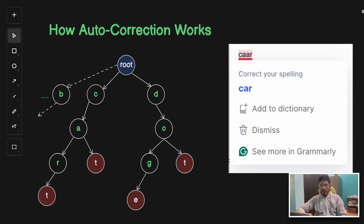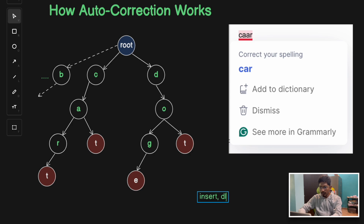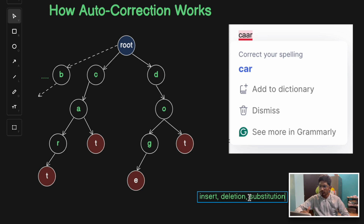Now let's see how auto-correction actually works. The auto-correction technique tries to find similar words matching the input word. If you input a wrong word like 'caar', it tries to find a list of matching words. It uses two techniques — the first is edit distance. Edit distance measures how many edits or small changes are needed: those changes can be an insert operation, a deletion operation, or a substitution operation.